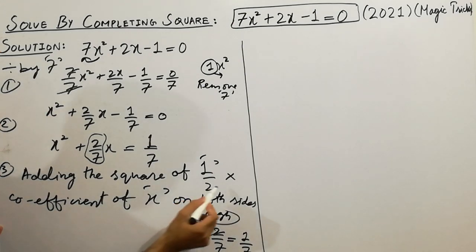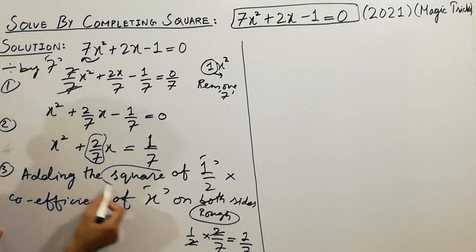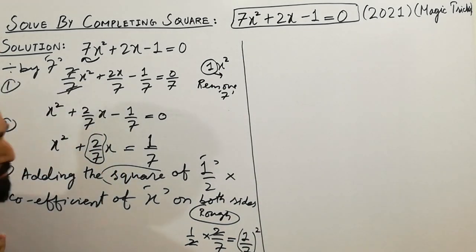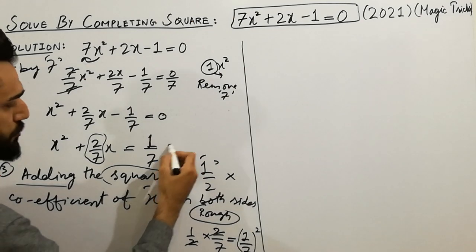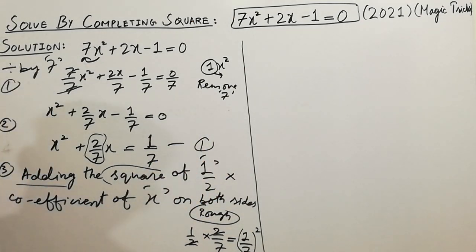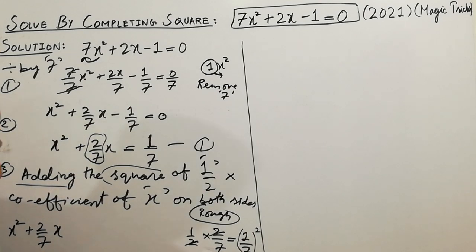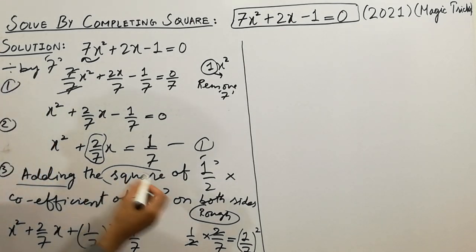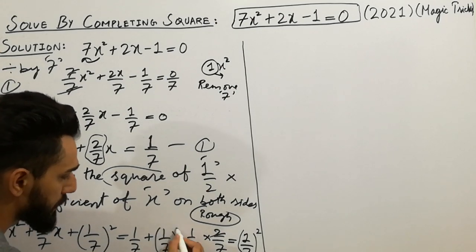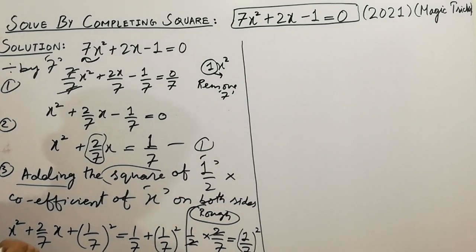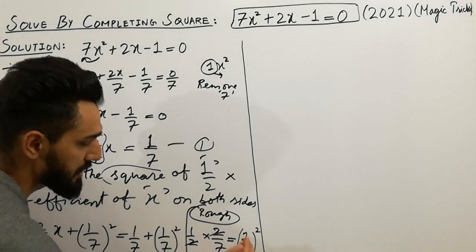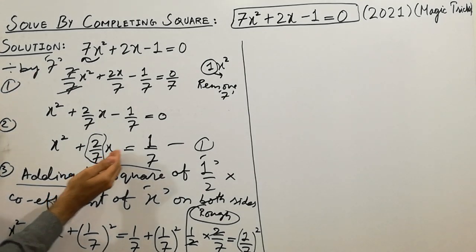After taking the coefficient of x and multiplying by 1 over 2, you have to take the square. Taking the square, you get the value of 1 over 7 squared for completing scale. You add this value to both left-hand side and right-hand side. So the equation becomes: x squared plus 2 over 7 x plus 1 over 7 squared is equal to 1 over 7 plus 1 over 49.